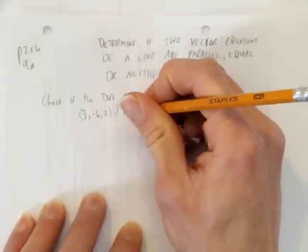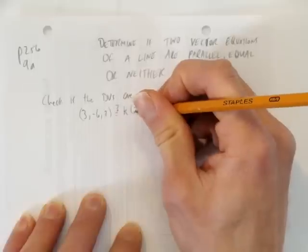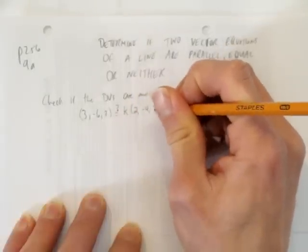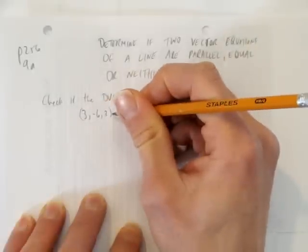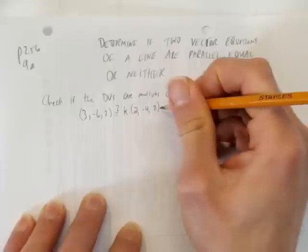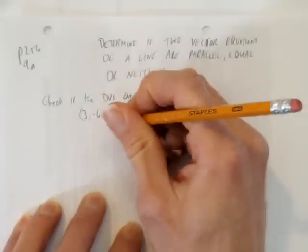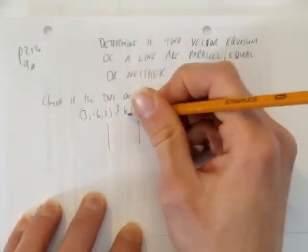to some factor k, 2, negative 4, 2. That is, is this vector some multiple k of this vector? I put a question mark. I don't know. But I'll try each piece separately, and if I get the same k, I'm good.